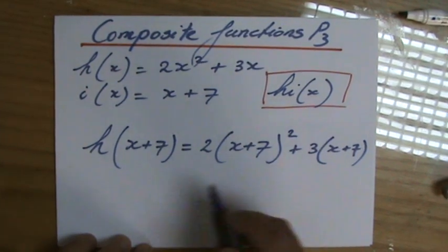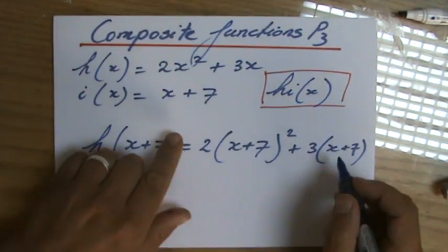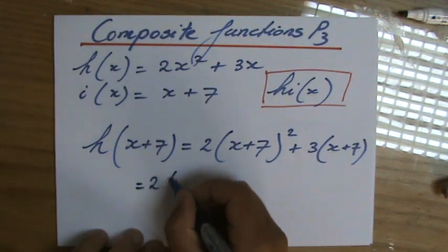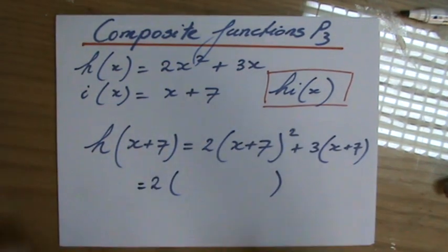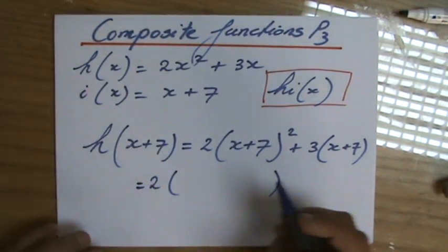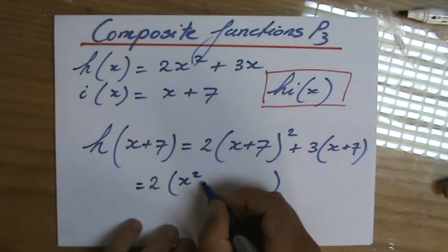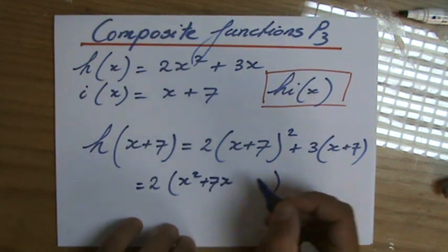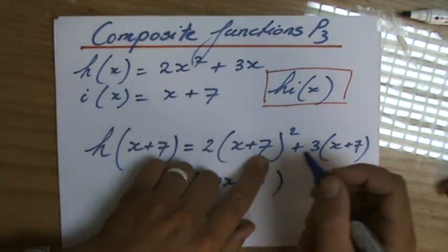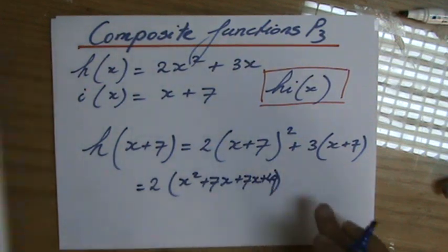So I'm going to expand these brackets. I'm going to put my equal sign here, because I know I'm going to need a lot of space. First I have to do the squared bit, so 2 times whatever is inside those brackets. I'm going to do it mentally now. This is x times x, so that is x squared, x times 7, that's 7x, 7 times x, that is 7x, and 7 times 7, that is positive 49.